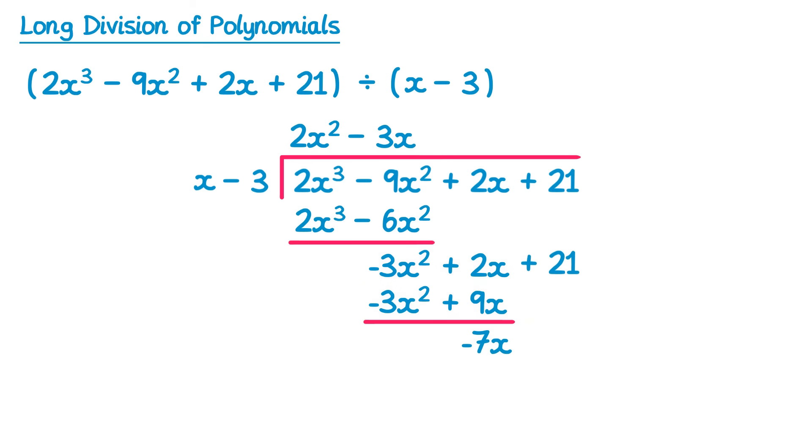And then bring the last term down. Now it's negative 7x divided by x, which is negative 7. And then we multiply negative 7 back through. Negative 7 times x is negative 7x. And negative 7 times negative 3 is a positive 21. If you subtract these you get 0. So we finish. The answer to this question is this quadratic here. So we can write that up there.